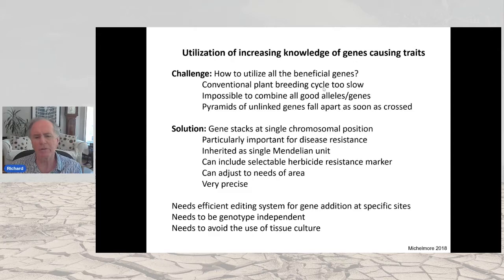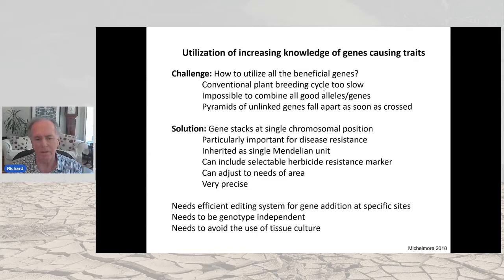As you accumulate more resistance genes, you face a conundrum: pyramiding them all by classical plant breeding would be enormous work. What you'd like to do is generate gene stacks at a single chromosomal position, inherited as a single Mendelian unit. You could place a selectable herbicide resistance marker in the middle and adjust the resistance genes to the needs of the area. This will require efficient gene-addition editing systems at specific sites — we don't have that yet, but I envisage it coming in the next five to ten years.